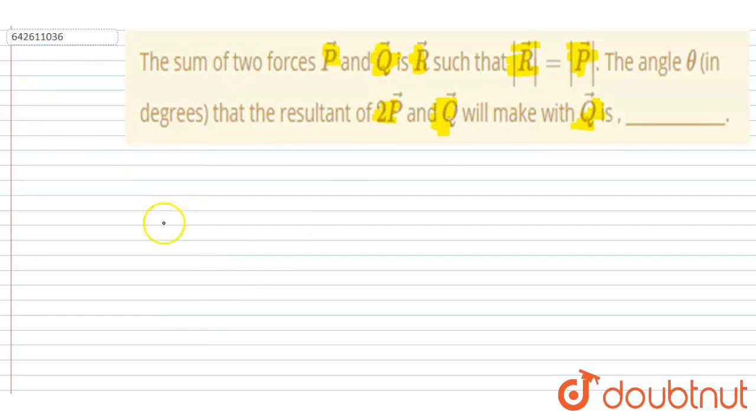Now if you see, let us take P vector and Q vector. So let's suppose this is the P vector, a Q vector, and this is the P vector, so this will be the resultant R vector.